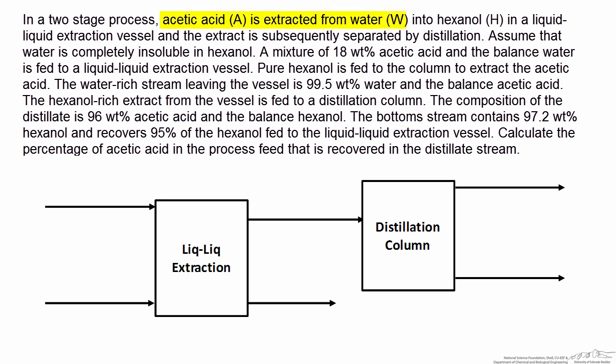In this problem we have acetic acid and water being fed to the process. These two species are difficult to separate by distillation, so the purpose of the liquid-liquid extraction column is to transfer acetic acid from water into hexanol, and the acetic acid-hexanol mixture is then fed to the distillation column. The schematic is shown below, however we don't have any information labeled on the flowchart, so we need to apply the problem statement to fully label the process diagram.